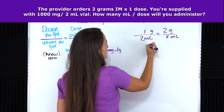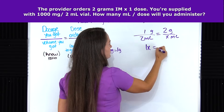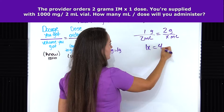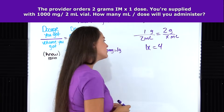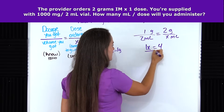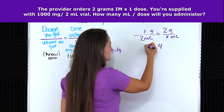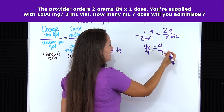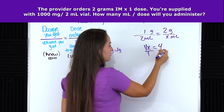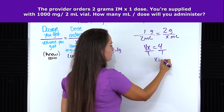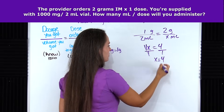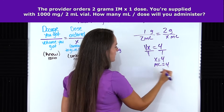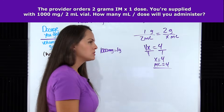So 1 times x is 1x, equals 2 times 2, which is 4. We need to get x all by itself, so we divide both sides by 1 — that cancels out, leaving x equals 4. x represented milliliters, so it's 4 milliliters. That's our answer. But let's double check it.